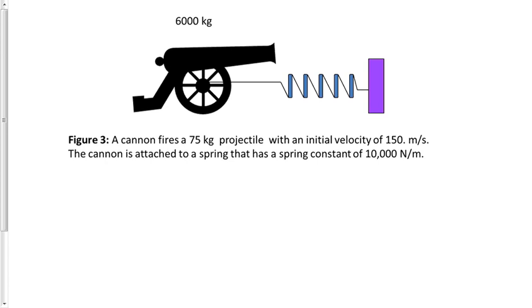A cannon fires a 75 kg projectile with an initial velocity of 150 meters per second, and it does fire it horizontally, so it goes this way. So all the momentum that it fires is going to be in the x direction.